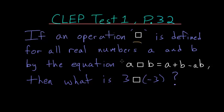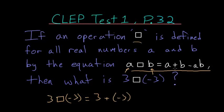Using this equation, we're substituting 3 for a and -3 for b. So 3□(-3) equals 3 plus -3, since -3 is b, minus...